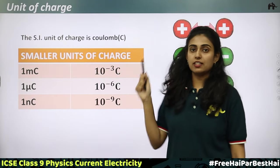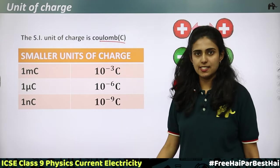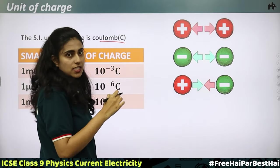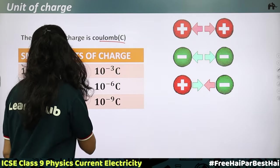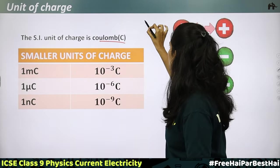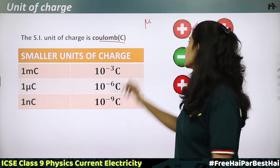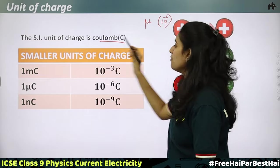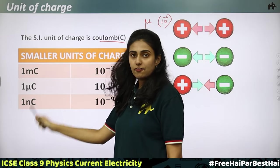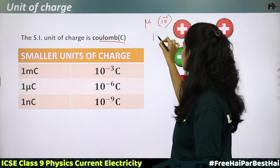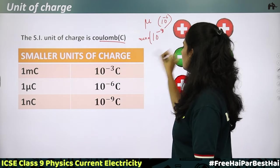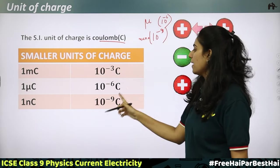The SI unit of charge is the coulomb, represented by capital C. Smaller units include millicoulomb, which equals 10 raised to minus 3 coulombs; microcoulomb, represented by the Greek letter mu, which equals 10 raised to minus 6 coulombs; and nanocoulomb, which equals 10 raised to minus 9 coulombs.